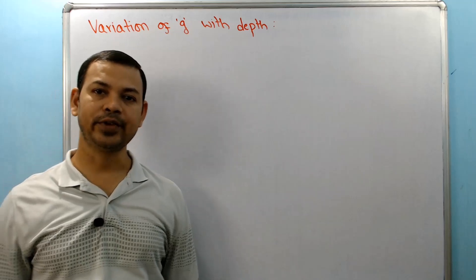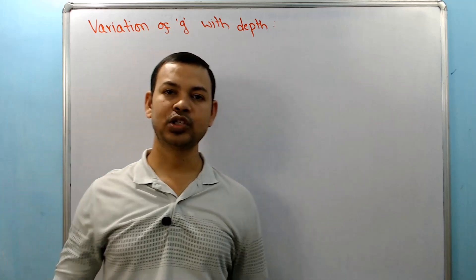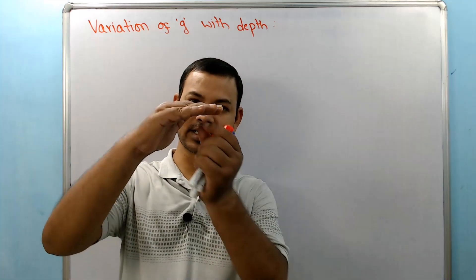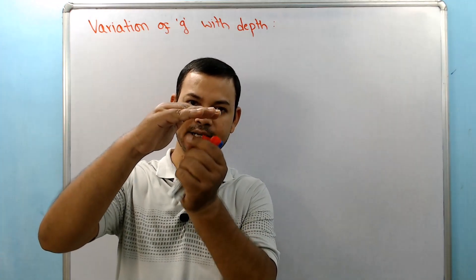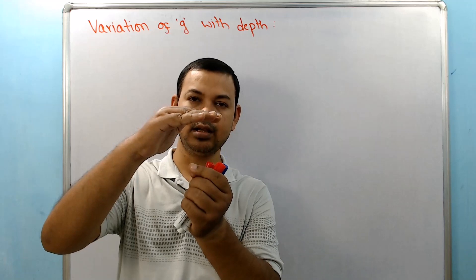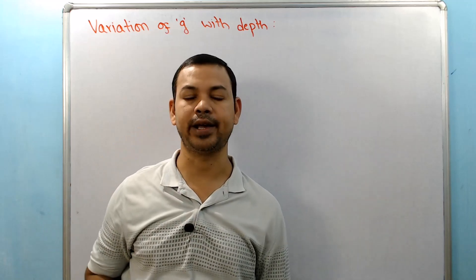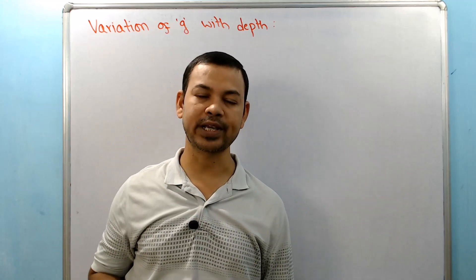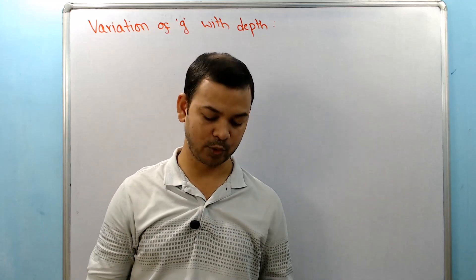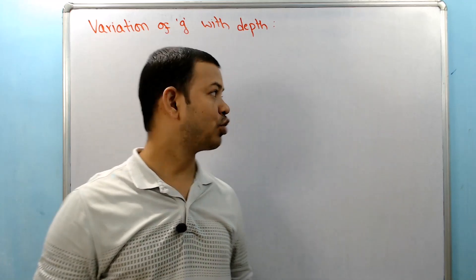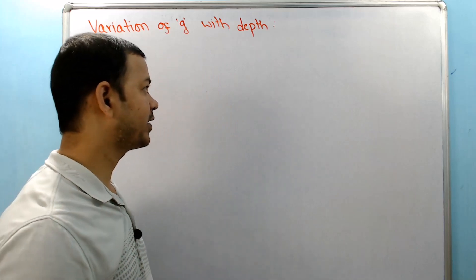Variation of G with Depth. At the surface of the earth, as we go down to some depth, how will the value of G change? We have to check it out. What is the formula? Let's see how we derive it today.